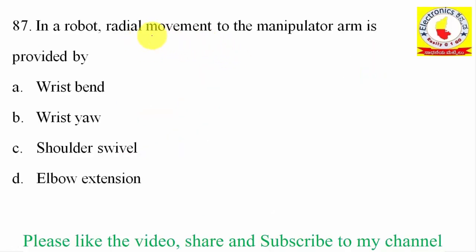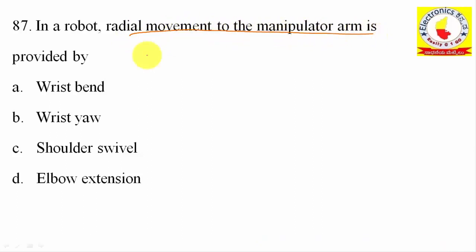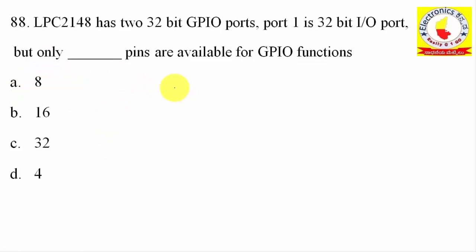87th question: In a robot, the radial movement of the manipulator arm is provided by — wrist bend, wrist swivel, shoulder swivel, or elbow extension? The correct option is wrist bend.